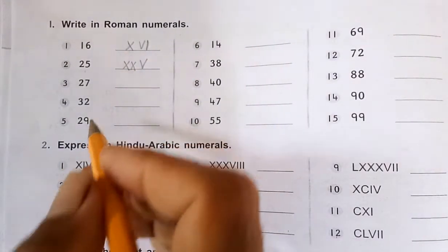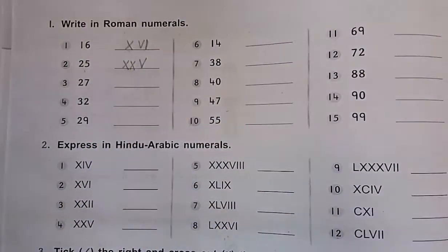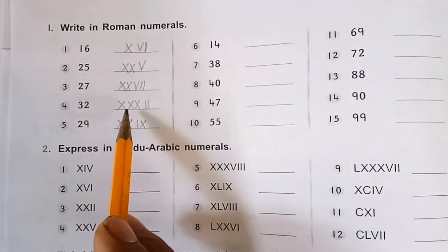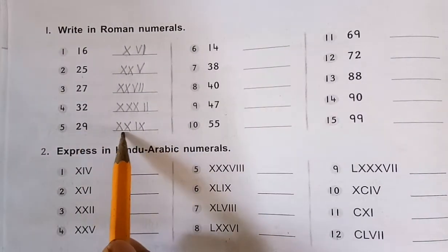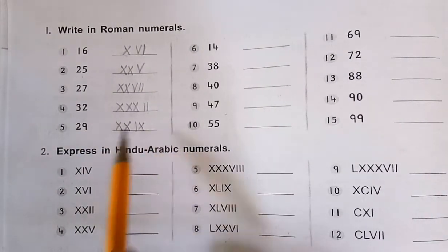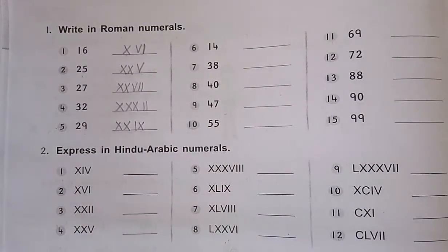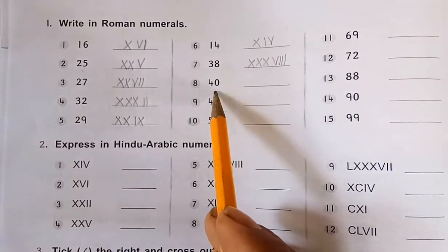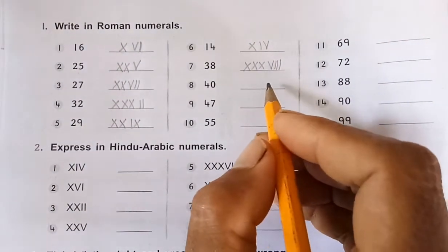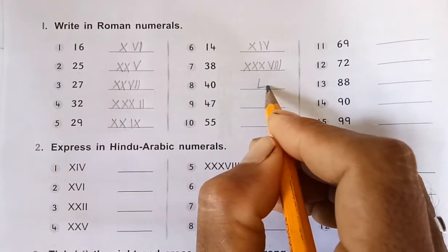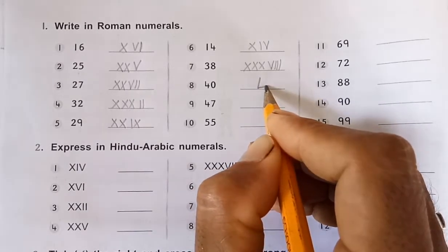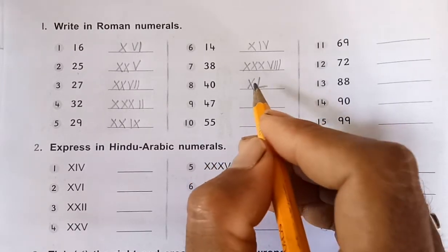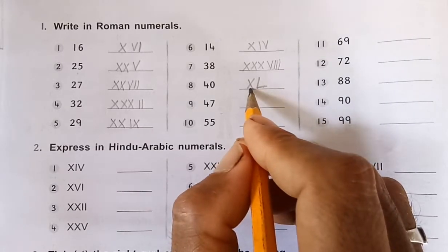Similarly, 27 is written as XXVII. For 32, it is 30 plus 2. For 29, we use IX which means 9. For 40, we use the subtraction principle: we know L represents 50, and writing X to the left side gives 50 minus 10, which equals 40.